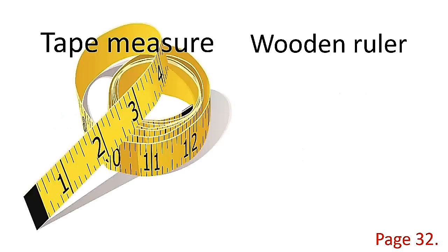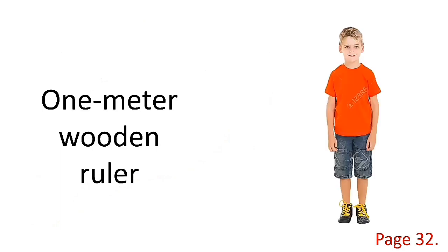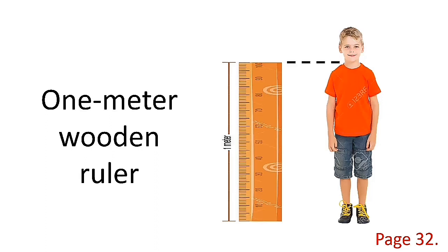The first instrument is the tape measure — everybody say: tape measure. The next one is the wooden ruler. You can find these measuring instruments at a school supply store, and you can also see them on page 32. Here I have a boy, and let's measure his height using the wooden ruler. You can see at the neck of this boy, the measurement is one meter.